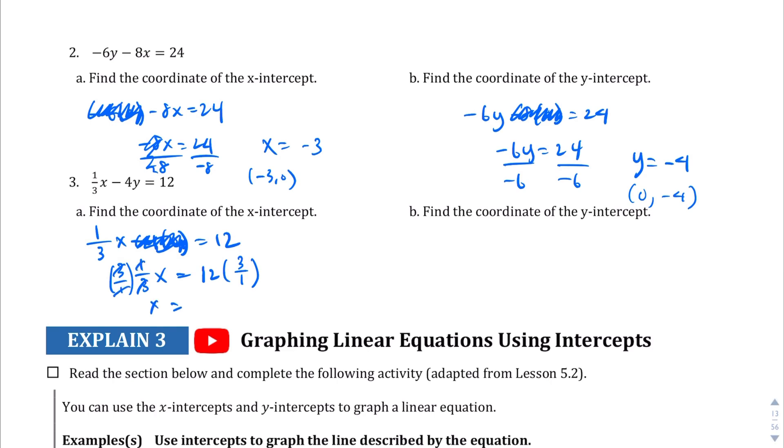And then 12 times 3 over 1 is just, if we multiply the numerators together, 12 times 3 is 36, 1 times 1 is 1. And we don't really need to write the 1 in the denominator. So x equals 36. So your first point here is 36 comma 0.